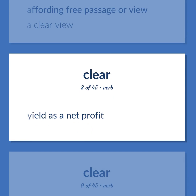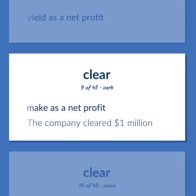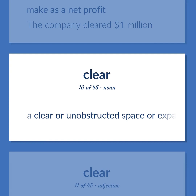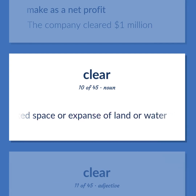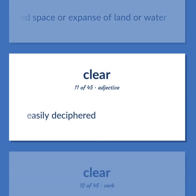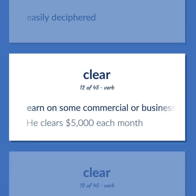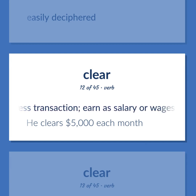Yield as a net profit. Make as a net profit. The company cleared $1 million. A clear or unobstructed space or expanse of land or water. Easily deciphered. Earn on some commercial or business transaction; earn as salary or wages. He clears $5,000 each month.